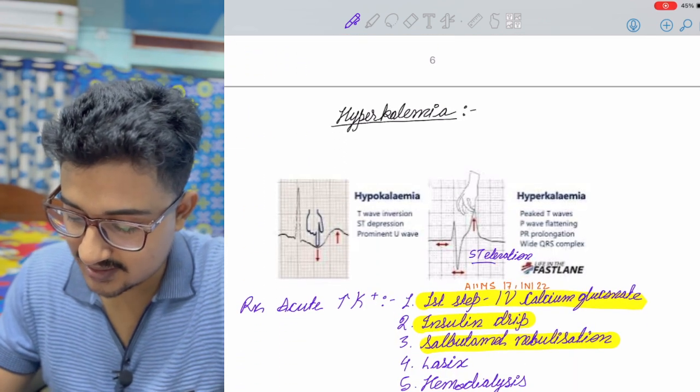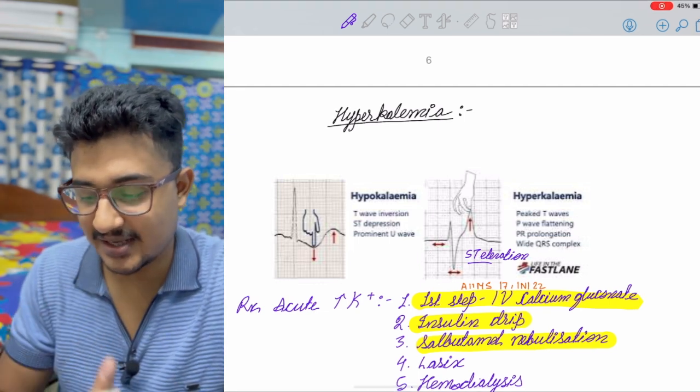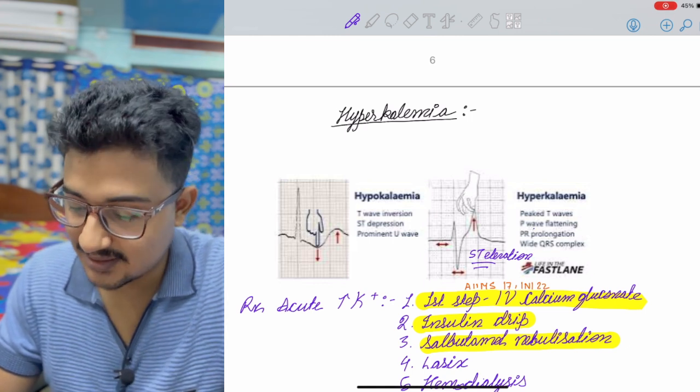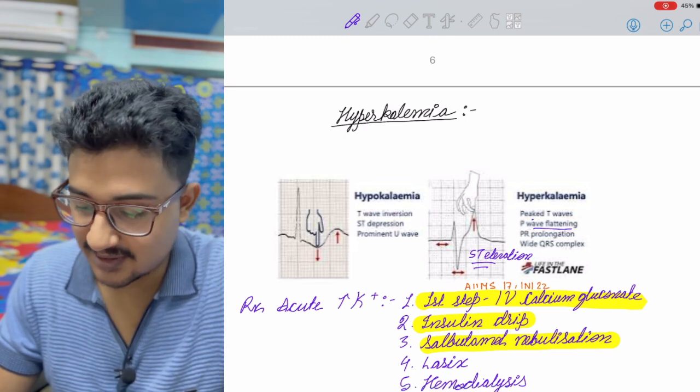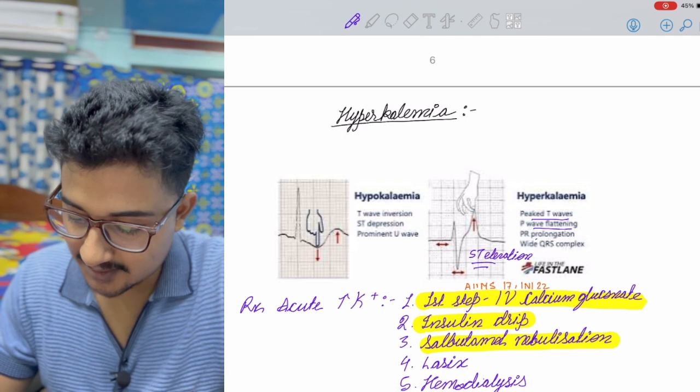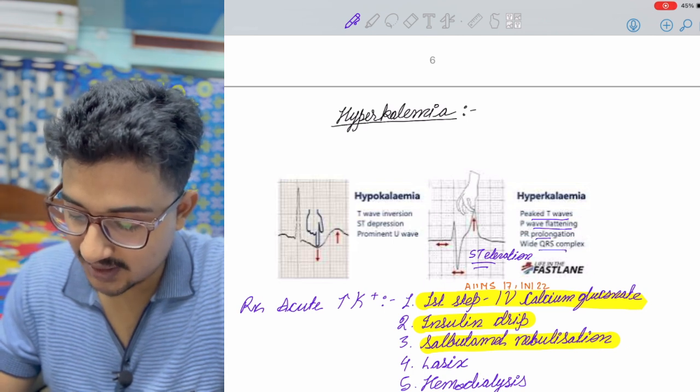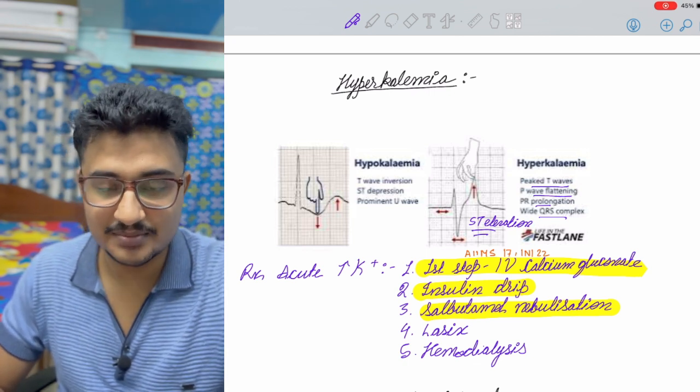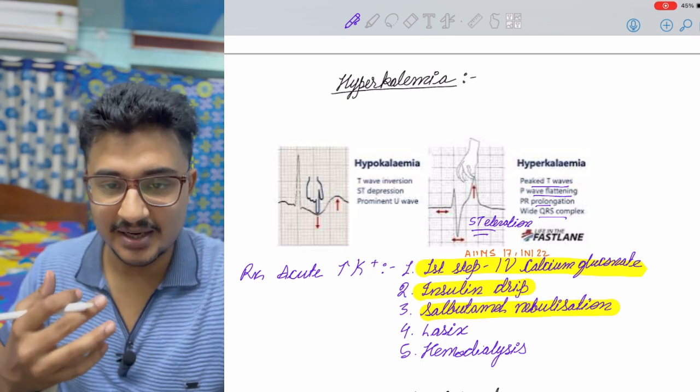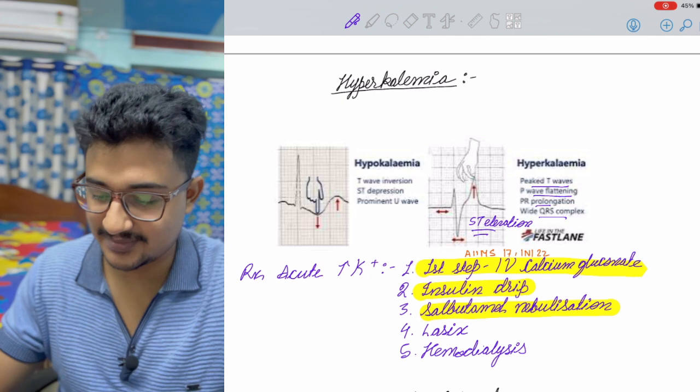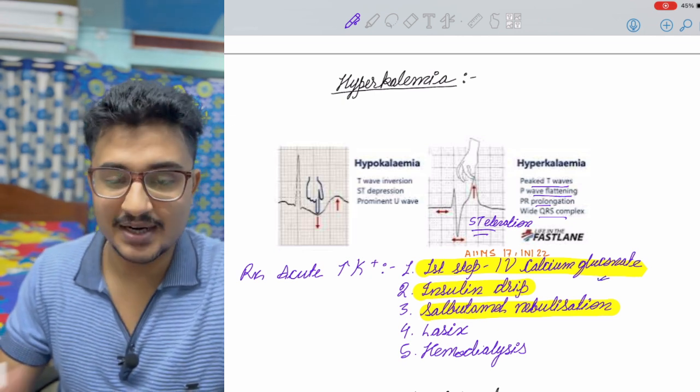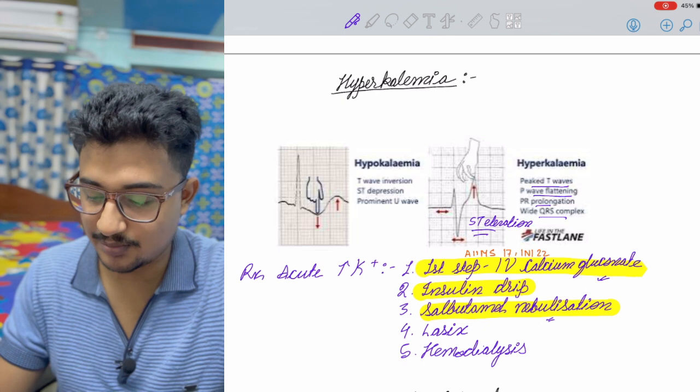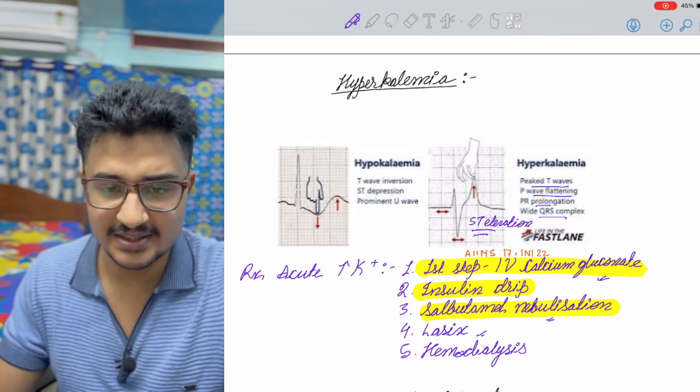Coming to hyperkalemia, you can see ST elevation. Everything would be opposite. Remember the hypokalemia and everything would be opposite. There was ST depression, here would be ST elevation. There was P wave peaking, here would be P wave flattening. The T wave was inverted, the T wave would be peaked. The PR interval would prolong, widened QRS in case of acute hyperkalemia. This is asked many times in AIIMS question, maybe asked in NEET-PG also. I have done this in my medicine ward postings many times. First step we give is calcium gluconate so that the arrhythmia is prevented. After that we target to reduce the potassium. That is by insulin drip, salbutamol nebulization, giving lasix. If it is not controlled, hemodialysis.